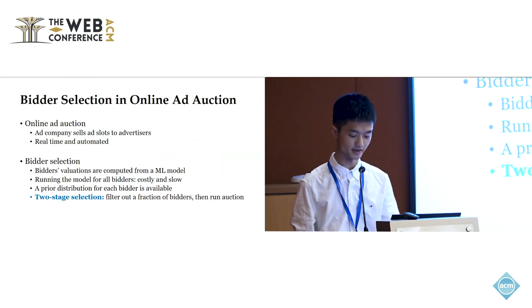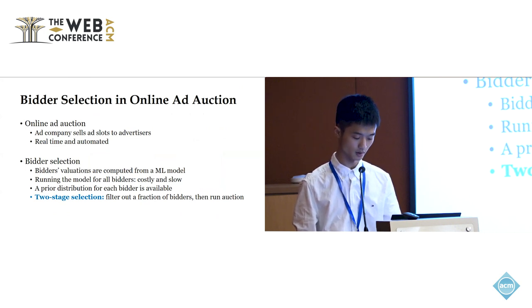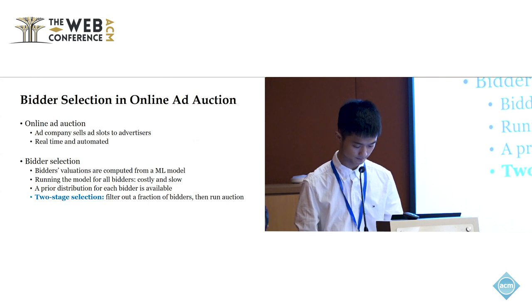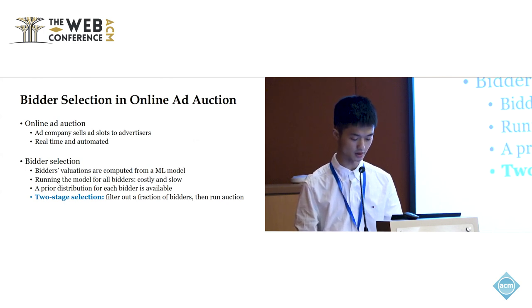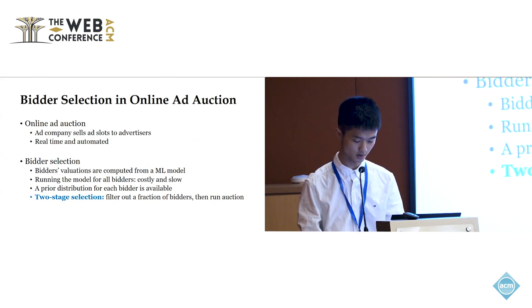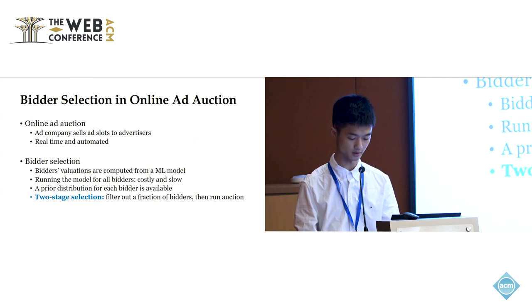When we browse the internet, we see ads alongside web pages. These ads are sold by ad companies to advertisers in real time via automated auctions. In such auctions, the ad company usually runs a complex machine learning model on each advertiser to get an accurate estimate of their valuation for the ad slot. However, since running the model for each advertiser incurs great computation, while the whole process must finish in a short period of time, it is sometimes impossible to run the model for each advertiser. In practice, the platform handles this with a two-stage selection process.